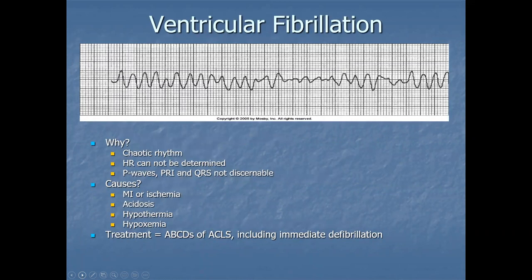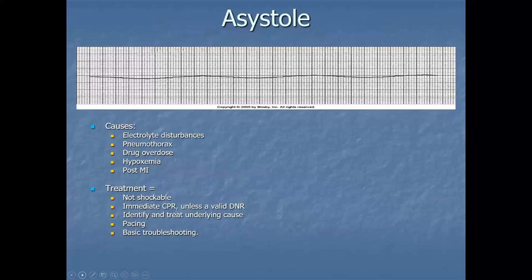Ventricular fibrillation: it's chaotic. This is coarse ventricular fibrillation — fine ventricular fibrillation has much smaller deflections and can look almost like asystole. Heart rate cannot be determined. P waves, PR interval, and QRS are not discernible. Causes include myocardial infarction or ischemia, acidosis, hypothermia, and hypoxemia. The ABCs — or CABs of ACLS — including immediate defibrillation is the direction to go. Think about your Hs and Ts.